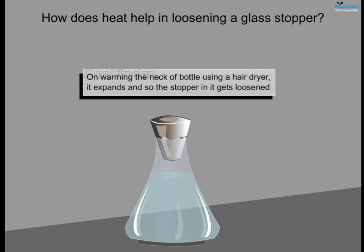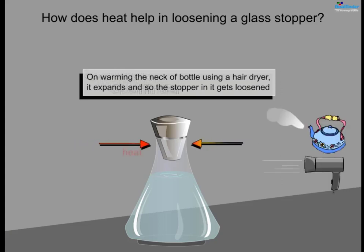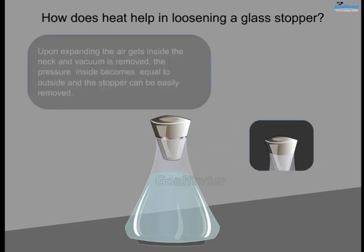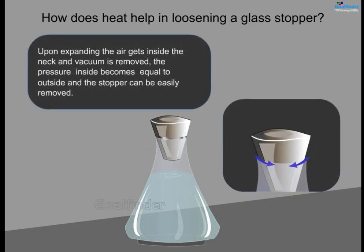On warming the neck of the bottle using a hair dryer, the glass expands and the stopper in it gets loosened. If the flask is regular soda glass, less heat is required to open it, as it has a higher coefficient of expansion than pyrex glass. The coefficient of expansion for ordinary glass is 9 × 10⁻⁶ /°C and for pyrex glass is 4 × 10⁻⁶ /°C. Since glass is a bad conductor, heat will not pass to the stopper. Upon expanding, air gets inside the neck, the vacuum is removed, pressure equalizes, and the stopper can be easily removed.